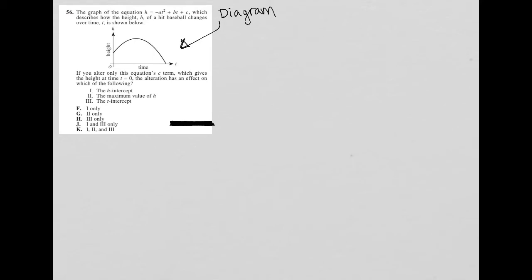It looks like with this particular graph, I have time on the x-axis, height on the y-axis, and over time the height goes up and then goes down to zero.